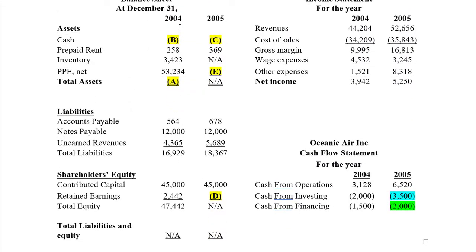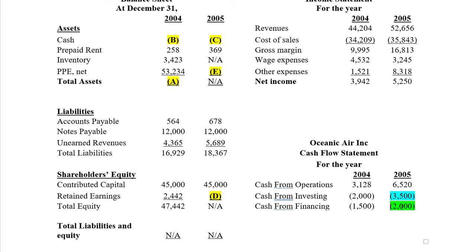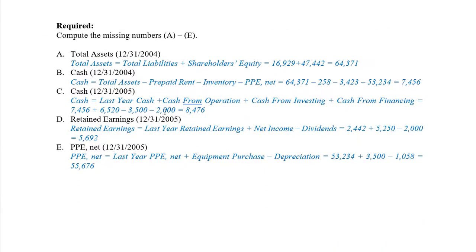We now have pretty much everything in this column, which is great because then we solve the next column. We have A and B, and need to solve for C. If we've done B right, we have the beginning cash at the start of 2005, and this is the ending cash at end of year. To get from beginning to end, we need the change in cash — the total delta. We get there from cash from operations, investing, and financing, netting positive and negative cash flows, then adding it to the beginning cash balance to get the end-of-year cash.